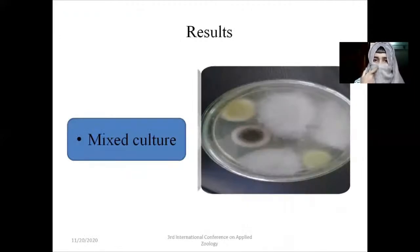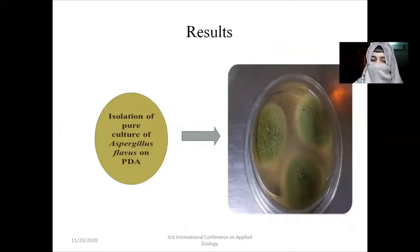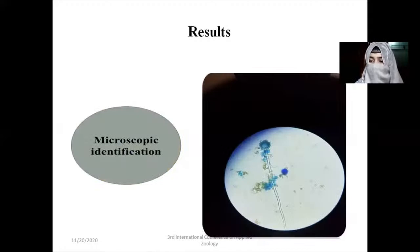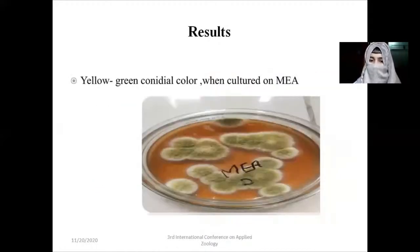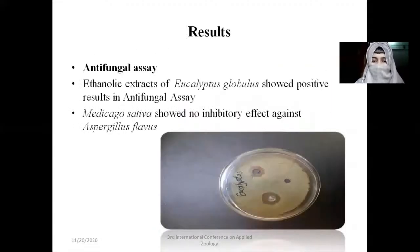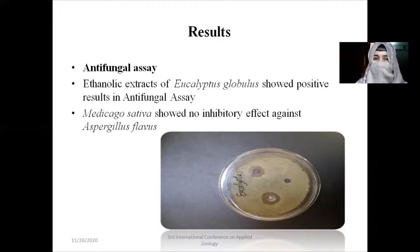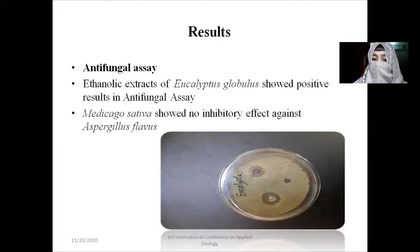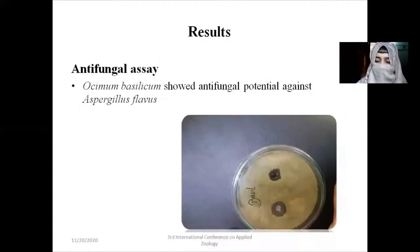Results: mixed culture showed Aspergillus niger and Aspergillus flavus. Pure culture of Aspergillus flavus was made on PDA. Microscopic identification showed yellow-green conidial color when cultured on malt extract agar. For antifungal assay results: among the four plants, Eucalyptus globulus and Ocimum basilicum showed positive inhibitory effects, while methanolic extract of Aloe vera and ethanolic extract of Medicago sativa showed no inhibitory effect against Aspergillus flavus.